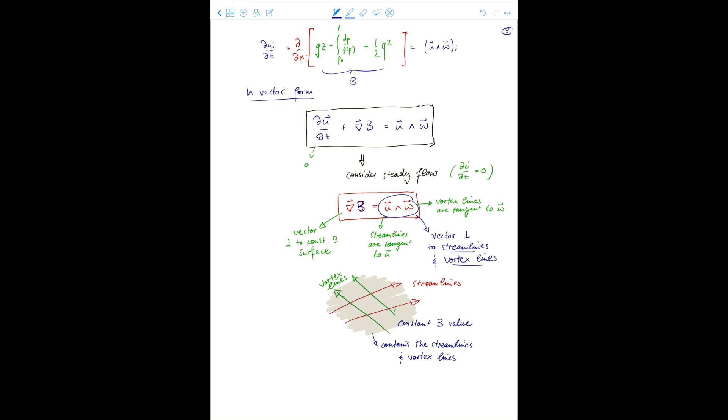So, we can write the Bernoulli equation as follows. b is equal to a half q squared plus p0 to p1 over rho dp dash plus gz. And that is constant along streamlines and vortex lines. And this thing is what we call the Bernoulli equation.